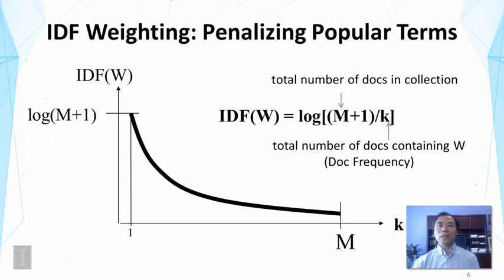So how can we address that problem? In this case, we can use the IDF weighting that's commonly used in retrieval. IDF stands for inverse document frequency. Now document frequency means the count of the total number of documents that contain a particular word. So here we show that the IDF measure is defined as a logarithm function of the number of documents that match a term or document frequency. So k is the number of documents containing word or document frequency. And M here is the total number of documents in the collection.